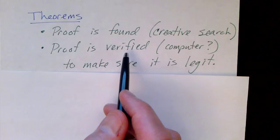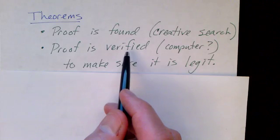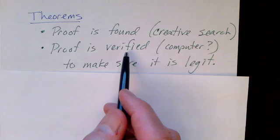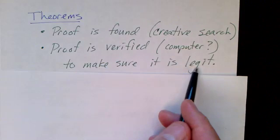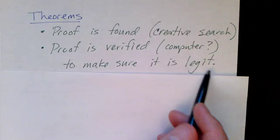For many proofs, someone else will just look over the steps in the proof and make sure that each step is a correct, valid, legal step in a proof. We want to make sure that the proof is legitimate and that it doesn't contain any errors.